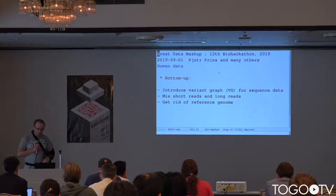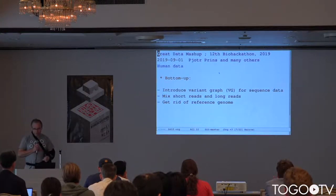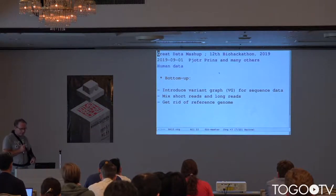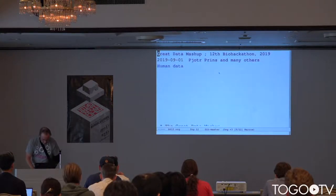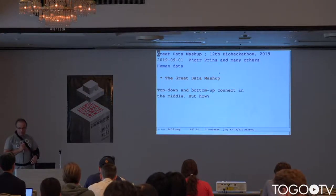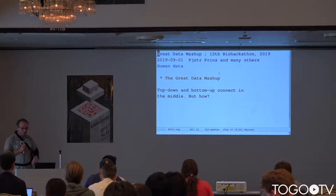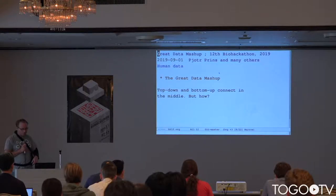From the bottom up, we are thinking about introducing a variant graph for sequence data, accommodating short reads and long reads, because more and more of that is coming. We really want to get rid of the reference genome. So how do these two connect in the middle? On the top you have the clinical data and human phenotyping, and from the bottom up we have the genome information.